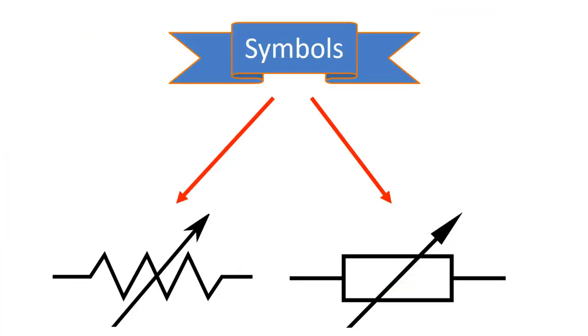There are two types of circuit symbols used for variable resistors. It is possible to see the use of both of these symbols. There is an arrow indicating that the fixed resistor symbol can be adjusted.